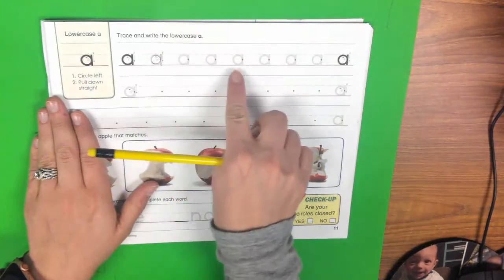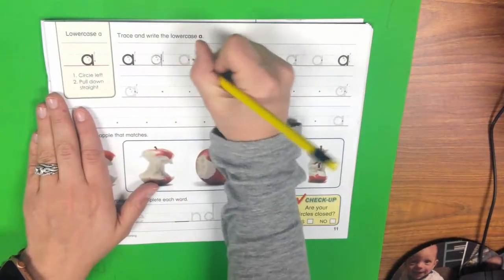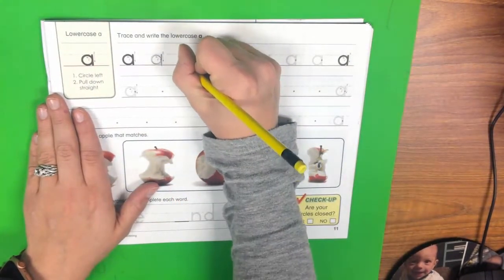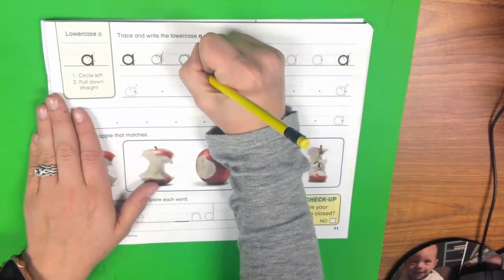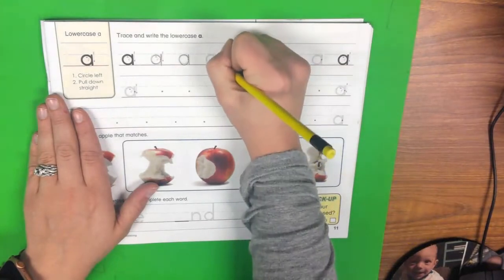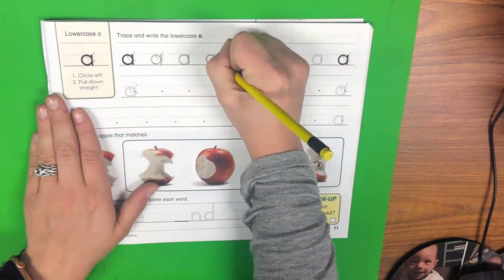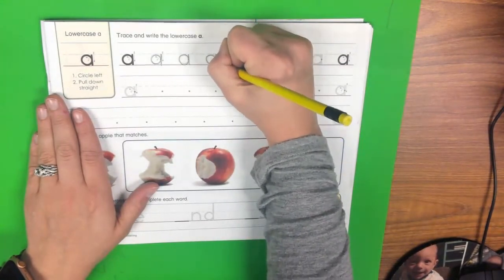And so on all of these ones, we're going to trace and practice. We're going to circle left, lift, pull down straight. Circle left, lift, pull down straight.